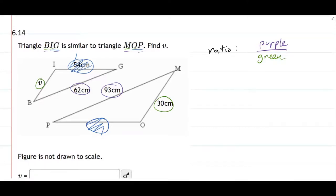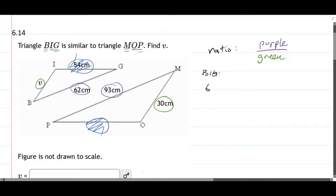So on the big triangle, the purple is the 62 divided by the green is V, which is what we want. Now over on the mop, we have purple on the top, 93. Green on the bottom, which is 30.